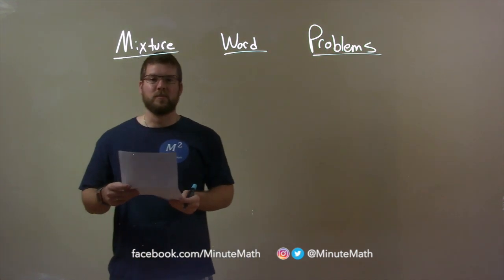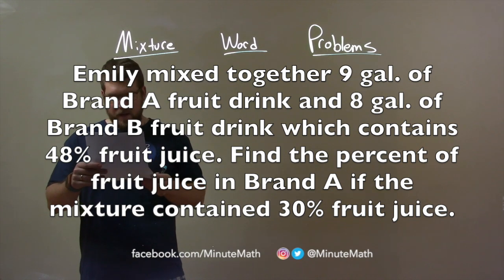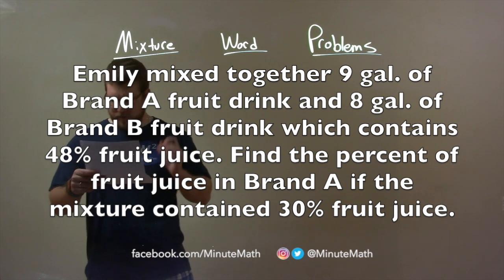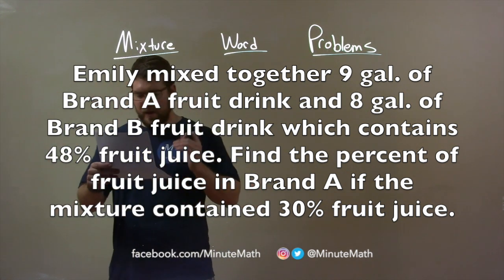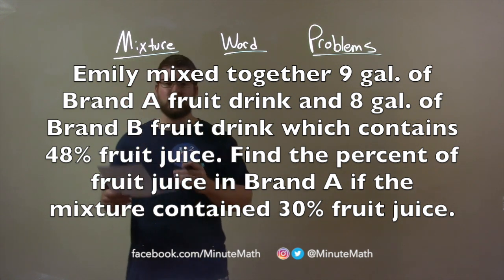If I was given this problem: Emily mixed together 9 gallons of Brand A fruit drink and 8 gallons of Brand B fruit drink, which contains 48% juice. Find the percent of fruit juice in Brand A if the mixture contained 30% fruit juice.